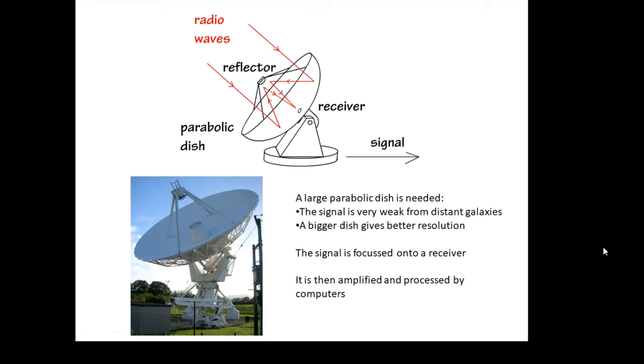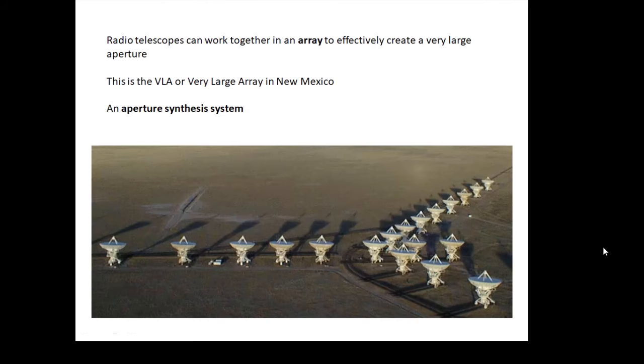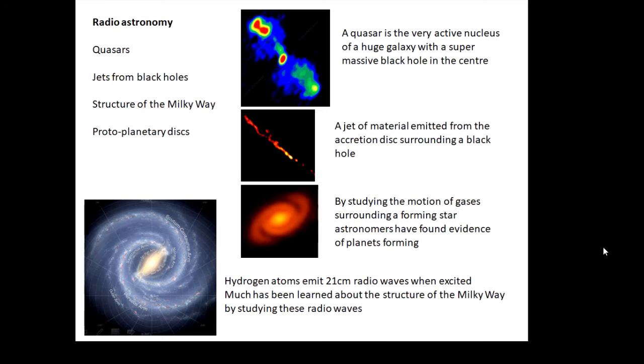Something we can do with radio telescopes is we can link them together to form an aperture synthesis system or an array. This is the VLA, the Very Large Array in New Mexico. Lots of radio telescopes linked together produces a very large aperture. Radio astronomy: what's it useful for?